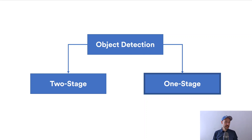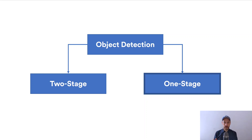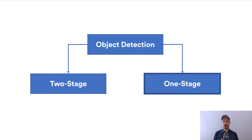Obviously this is less accurate because you don't have the refining stage, but it's much faster — almost twice as fast. And this is why it has become so popular, and this is what YOLO is. You Only Look Once is the name because you only run through it once. Another not-so-popular one-stage object detection algorithm is SSD, if you've heard of it, but YOLO is much, much more popular because it is very fast and reasonably accurate.